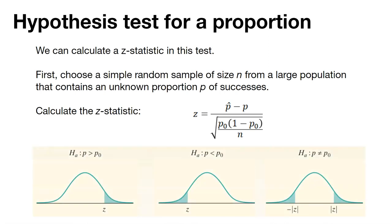Just like how we've done hypothesis tests with other values, we can calculate a hypothesis test for a proportion. We're going to go back to the z table for this example. First, we're going to do a simple random sample of size n from a large population, and we have an unknown proportion of p successes. So we can calculate a z statistic.